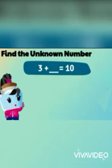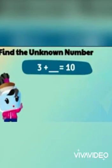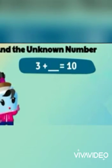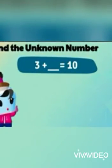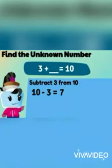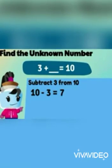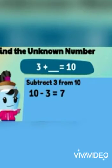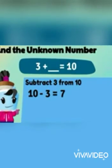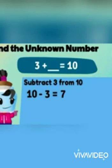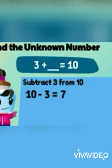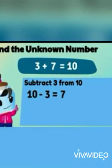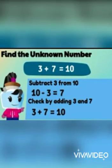Look at this example: three plus a missing number is equal to ten. How can we find out the missing number? We find that 3 plus 7 is equal to 10, so the missing number is 7.